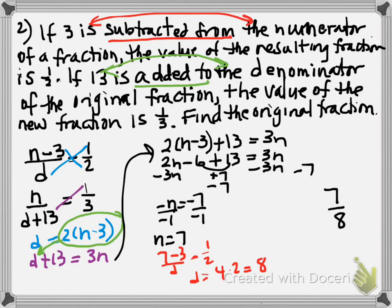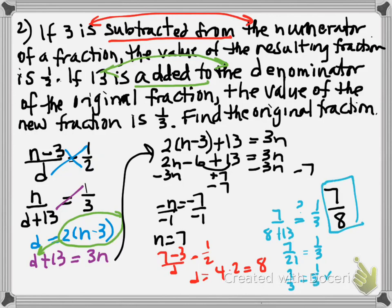Let's verify. If we subtract three from seven we get four; four over eight equals one-half — that checks out. If we add 13 to eight, does seven over 21 equal one-third? Seven over 21 reduces by seven to give one-third equals one-third. That confirms seven-eighths is the correct answer.